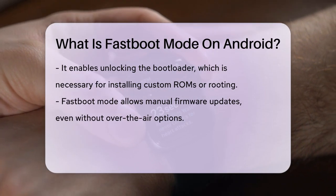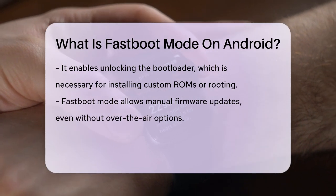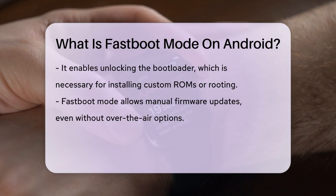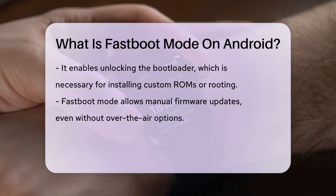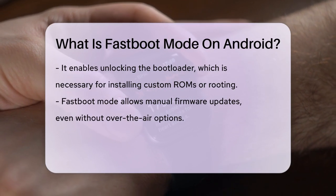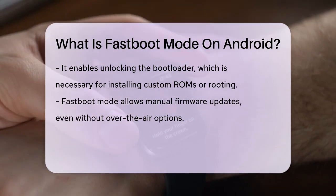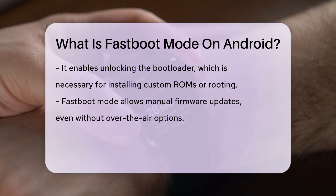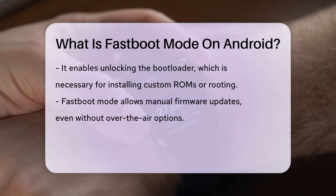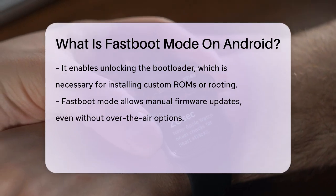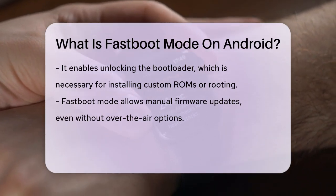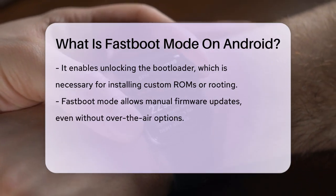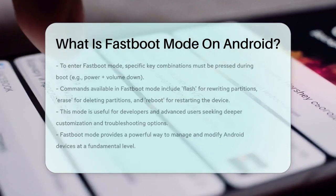To enter Fast Boot Mode, you typically need to press a specific combination of keys during the boot process. For example, on HTC, Google Pixel, and Xiaomi devices, you would press the power and volume down buttons simultaneously. The exact keys may vary depending on the device manufacturer.